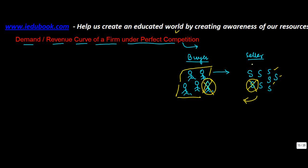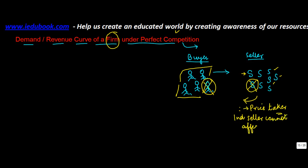In such a case, the firm is a price taker. This means the firm has to take the price as determined by the market forces of demand and supply. One individual seller cannot affect the price of goods. Even if he wants, he cannot affect the price of goods significantly. Even if he stops supplying goods, it does not affect the overall output. So he sells whatever output he has at given prices.